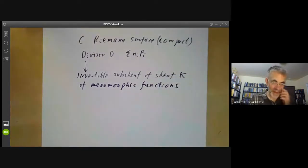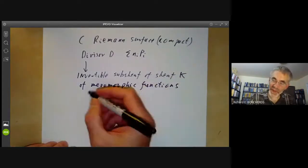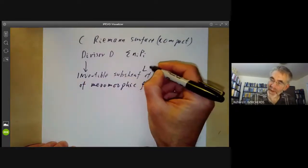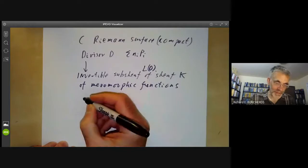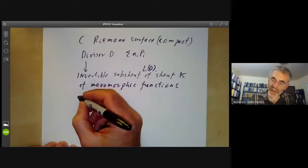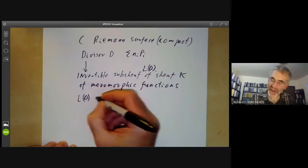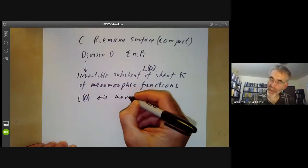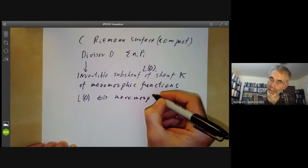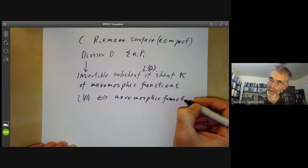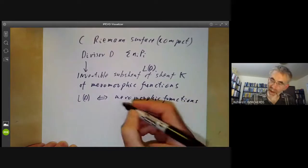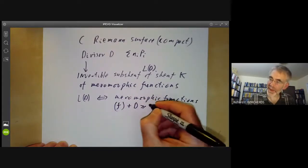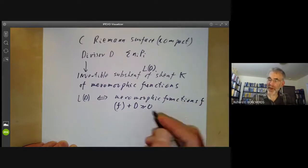This sheaf is called L(D). Sections of L(D) over an open set correspond to meromorphic functions such that F + D is greater than or equal to zero. Let me remind you what this means.